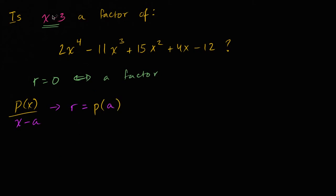So let's see what a is in this case. In this case our a is positive three. So let's just evaluate our polynomial at x equals three. If what we get is equal to zero, that means our remainder is zero and that means that (x minus 3) is a factor. If we get some other value, that means we have a non-zero remainder and this isn't a factor.